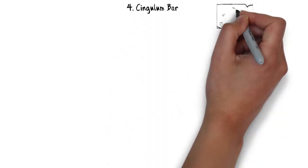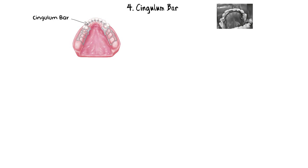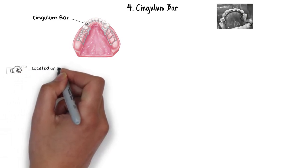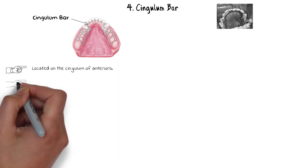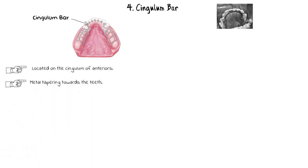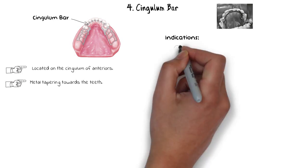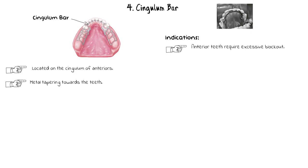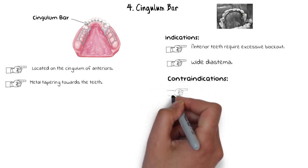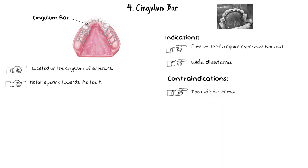The cingulum bar has metal located on the cingulum of the anterior teeth, scalloped to follow the interproximal contours with borders tapering towards the tooth surface. It can be used instead of a lingual plate when anterior teeth require excessive block-out of interproximal undercuts, or when wide diastema exists between mandibular anteriors. However, too wide a diastema is a contraindication, as the metal will inevitably be displayed.